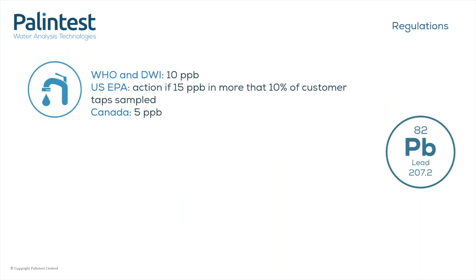There are a number of different regulations for lead in different situations. The most important is that for drinking water, as it is the most common source of human exposure. The WHO and DWI both stipulate a limit of 10 ppb. In the US, the rules are more complicated — you must take action if results are above 15 ppb in more than 10% of customer taps sampled. In Canada, the limit is stricter than anywhere else at 5 ppb.